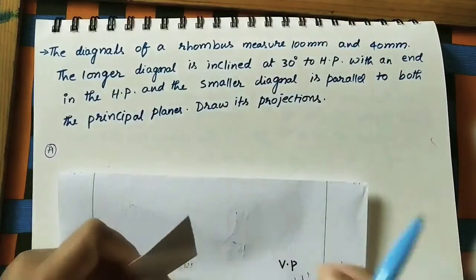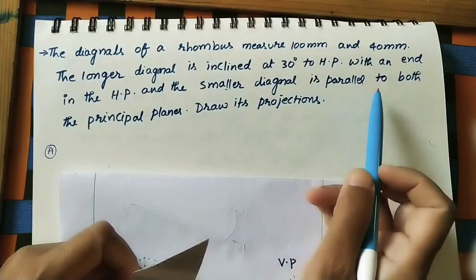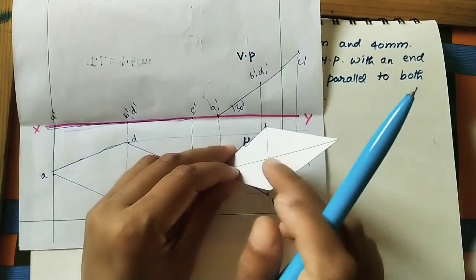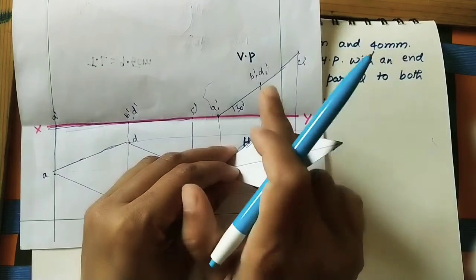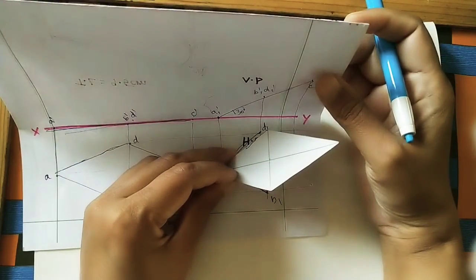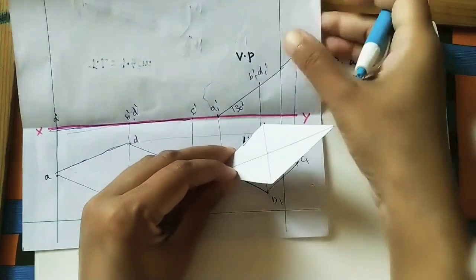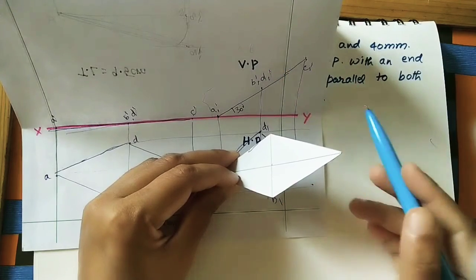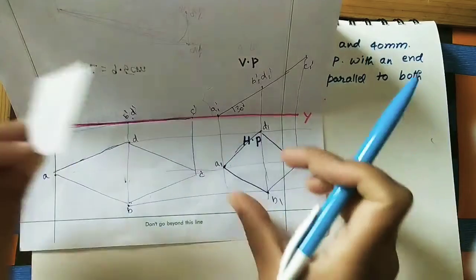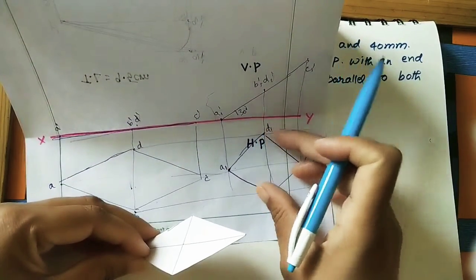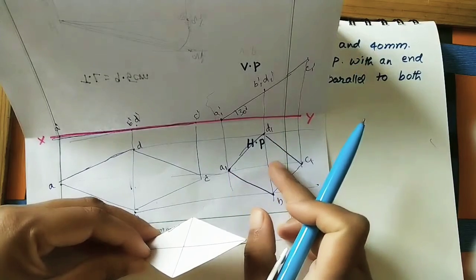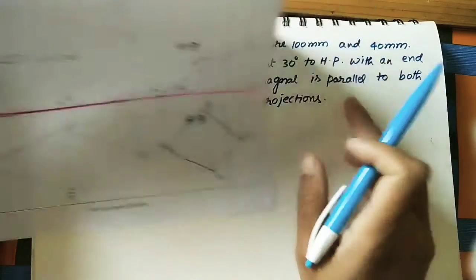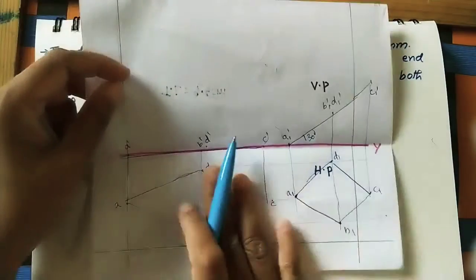After this position, the smaller diagonal must be parallel to both planes. In the current top view, the smaller diagonal is perpendicular to the vertical plane. Since it should be parallel to both planes, we need to reposition it. We will do these two diagrams first, then handle the condition that the shorter diagonal is parallel to both planes.